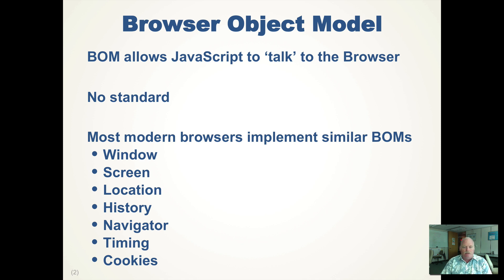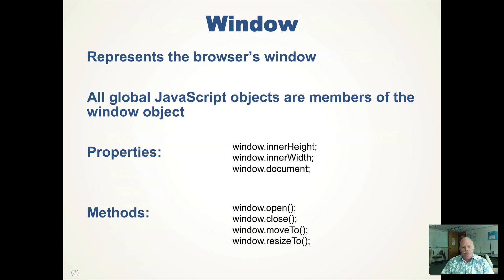If you're talking about Internet Explorer version 9 or below, all bets are probably off. Older versions of other browsers also probably don't implement all these features, but modern ones tend to do a better job. The first idea is that there's a window that represents the browser's window. All the global things in JavaScript are actually members of the window object.